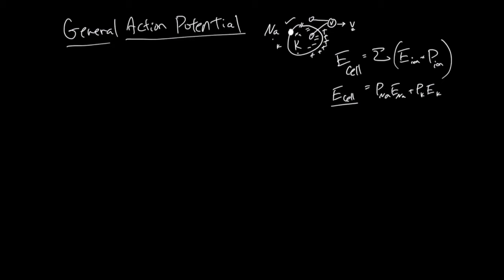In a cell, both things can move. When both things are moving, this is the permeability of Na in that both-things-moving state, and this is the permeability of K in that both-things-moving state. But E_Na is measured with only Na flowing in and out, everything else being the same, and E_K is measured by only letting K move in and out, everything else being the same. You can think of this as the pure Na membrane potential and this as the pure K membrane potential, and we use the permeability to weight them to compute the final cell's membrane potential.